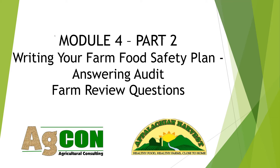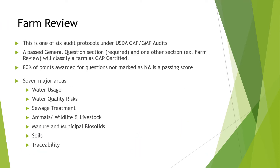Module 4 Part 2: Writing your farm food safety plan — answering audit farm review questions. Farm Review is one of six audit protocols under the USDA GAP/GMP audits. A passing general question section is required in one other section. For example, Farm Review will classify the farm as GAP certified if 80% of the points awarded for questions not marked as N/A is a passing score.